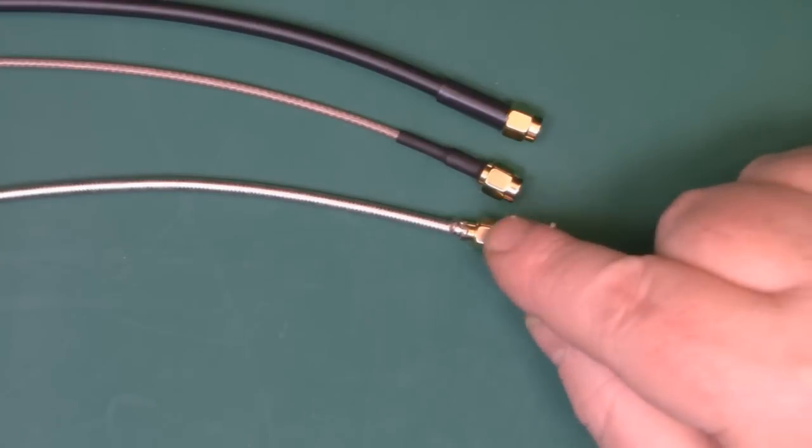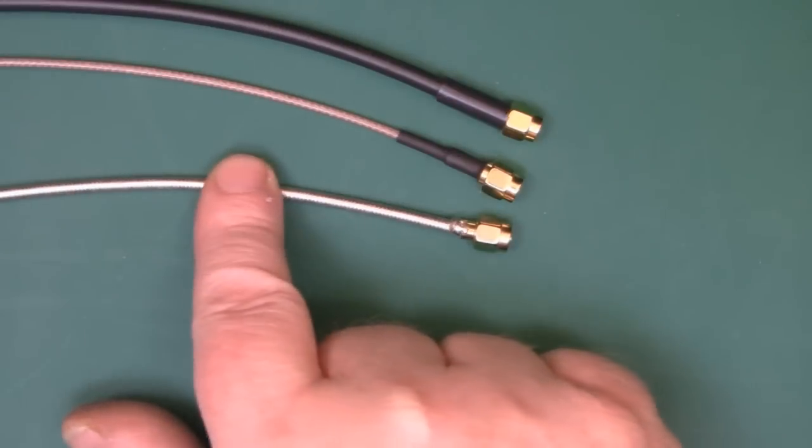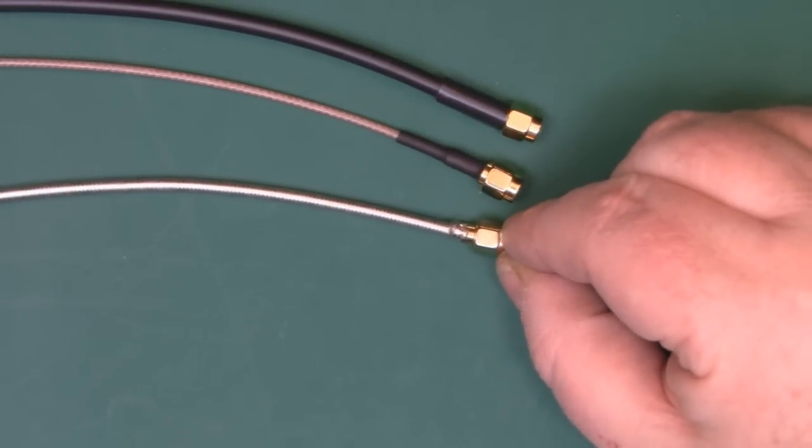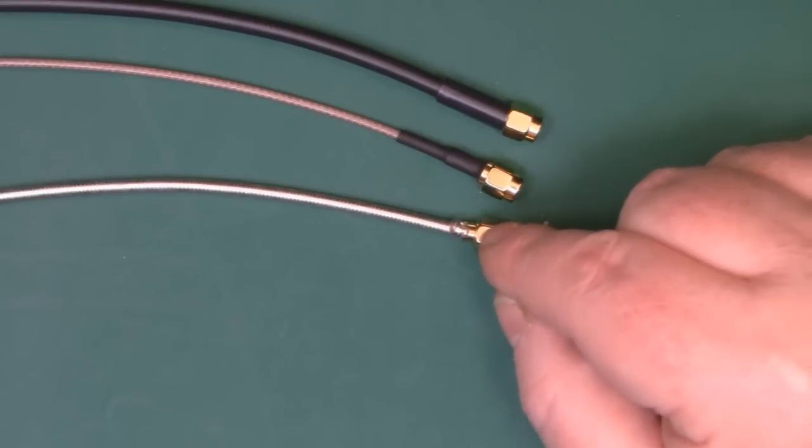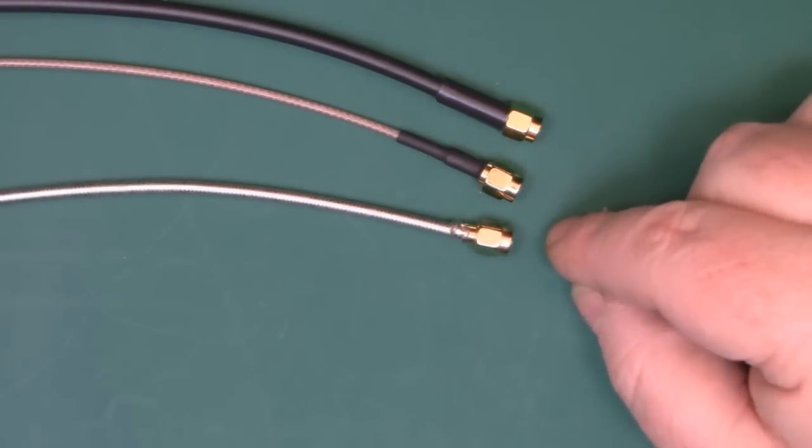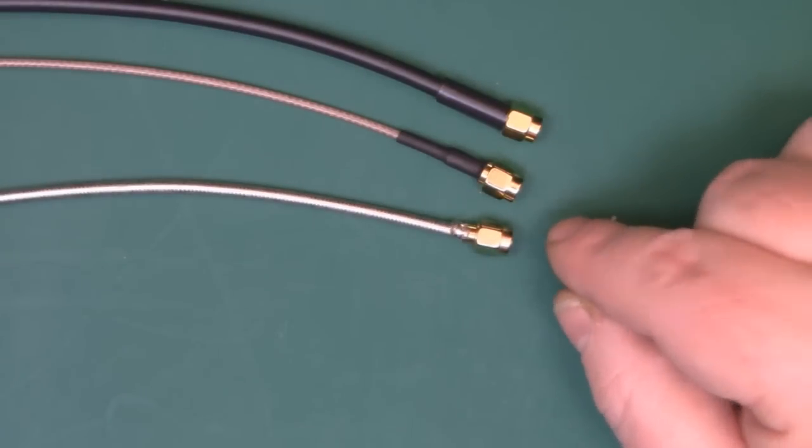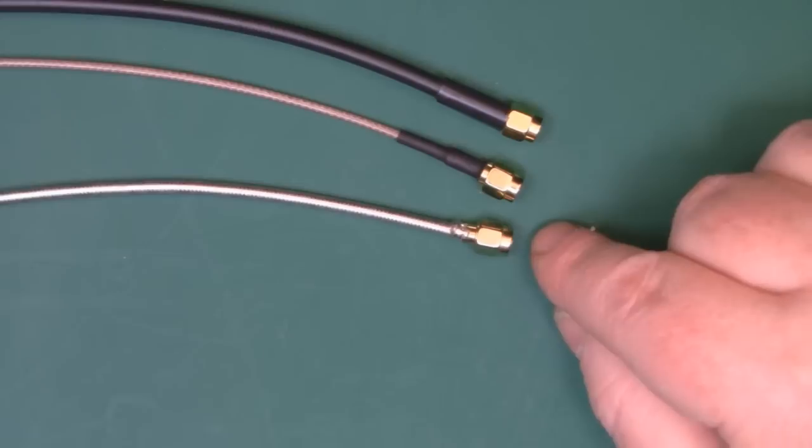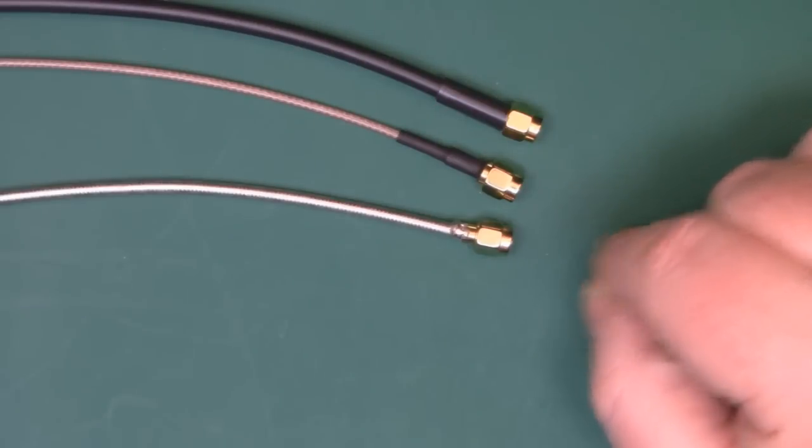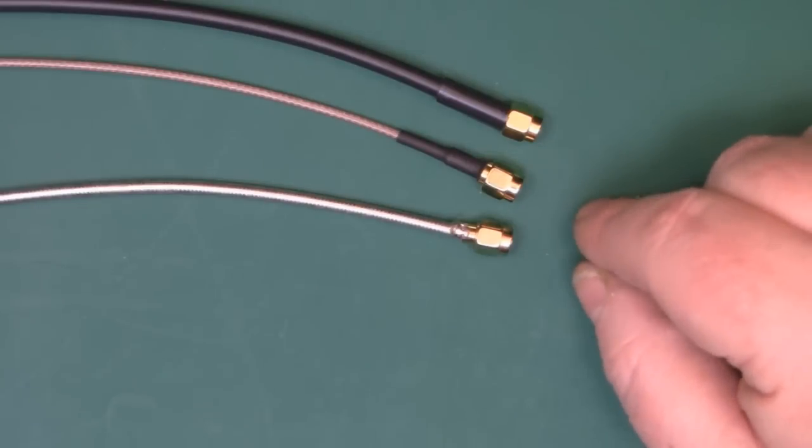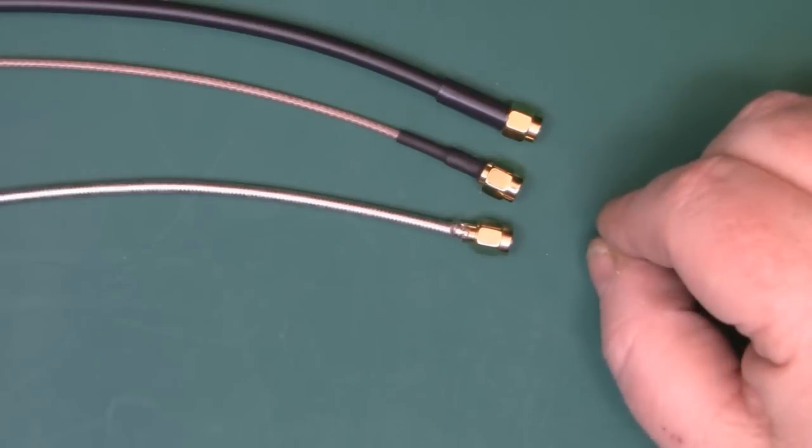The test showed that the loss you actually get through this is quite minimal. And remember as well that in this test I was using pigtails that are two meters long, and that's a lot longer than you should actually use for a pigtail. If you're going to make some for yourself to connect antennas to your wi-fi cards, I wouldn't recommend making one longer than half a meter. So I hope you enjoyed that video and it's answered a few questions for you when it comes to coax.